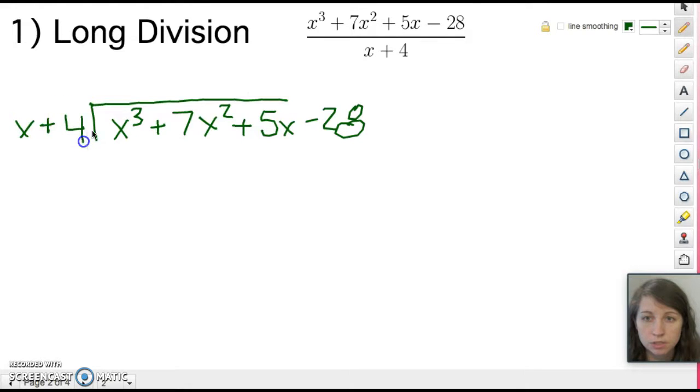So to start out we want to make sure anytime we're using any of these methods that the polynomial is in order in terms of its exponent. So we want the bigger exponent, x³, followed by the smaller and the smaller and then finally till we have no exponent. So we have x³, 7x², 5x, -28. We are good to go.